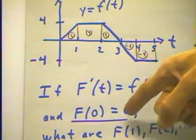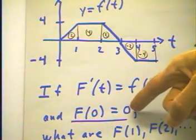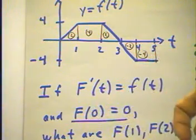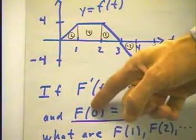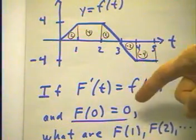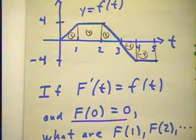And by letting big F of 0 equals 0, this means that we're measuring the depth from whatever the point is when t equals 0. Okay, so t equals 0, the depth is 0, and that's where we start our meter stick.